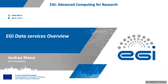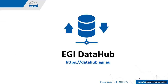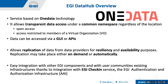Starting from the data services, I will cover three categories of service that we have in EGI for data: the data hub, online storage, and transfer. At the end I will briefly describe the plans to enhance the EGI data offer. Starting from the first service, which is the latest one available for our communities: the EGI Data Hub.